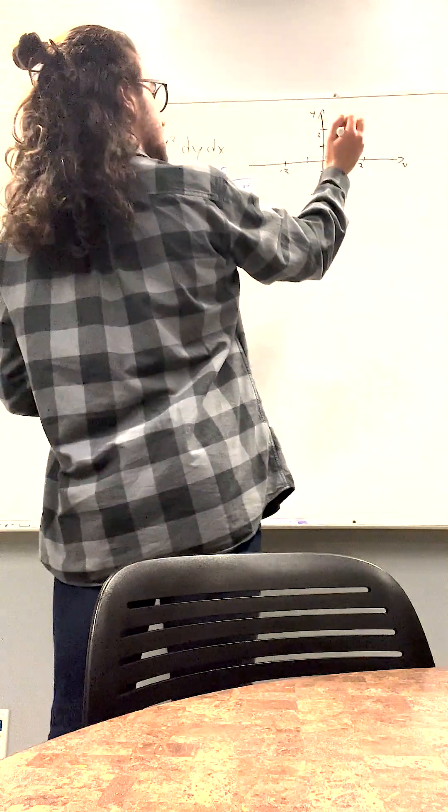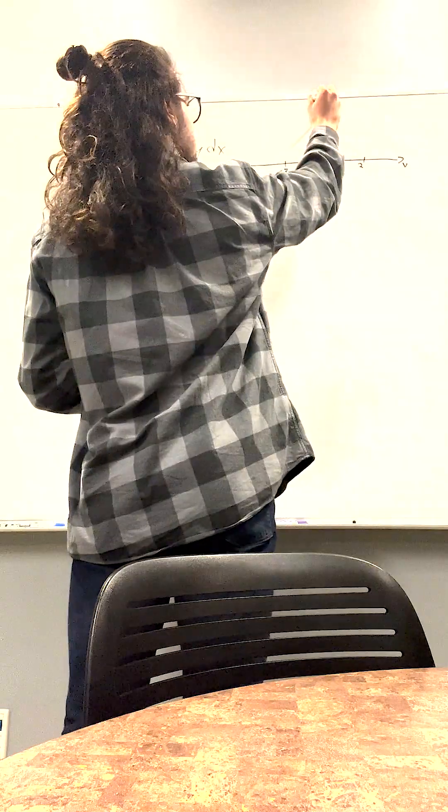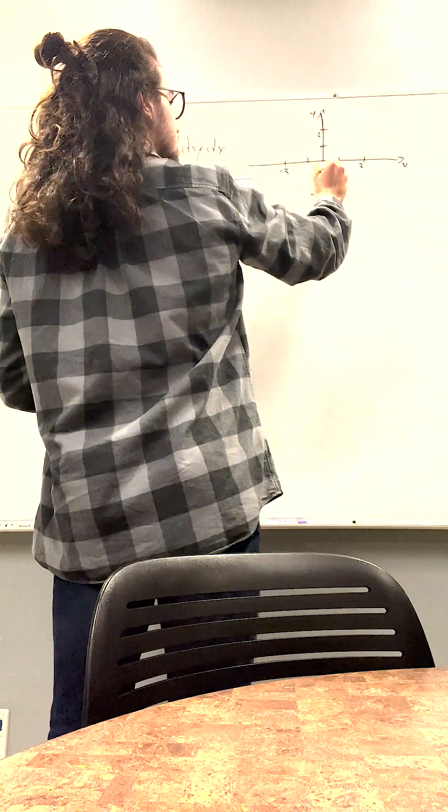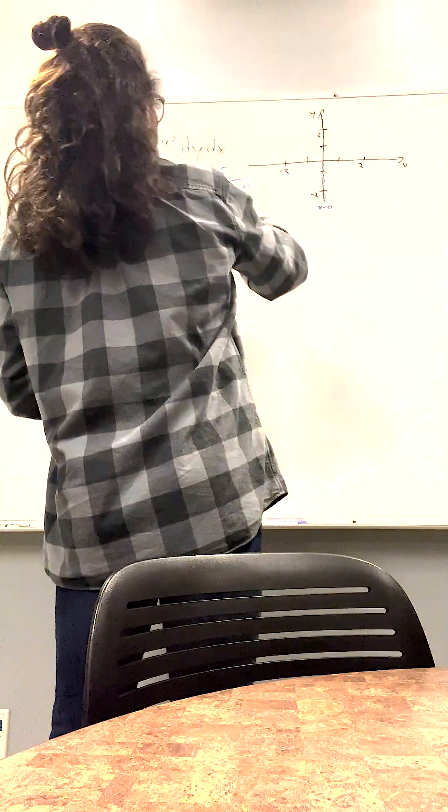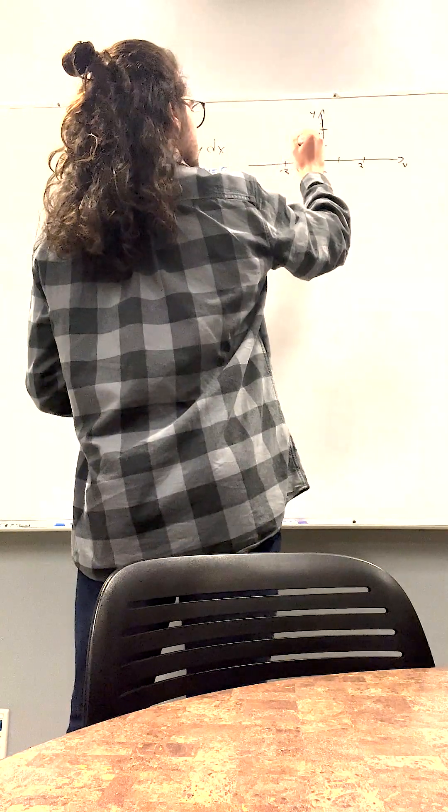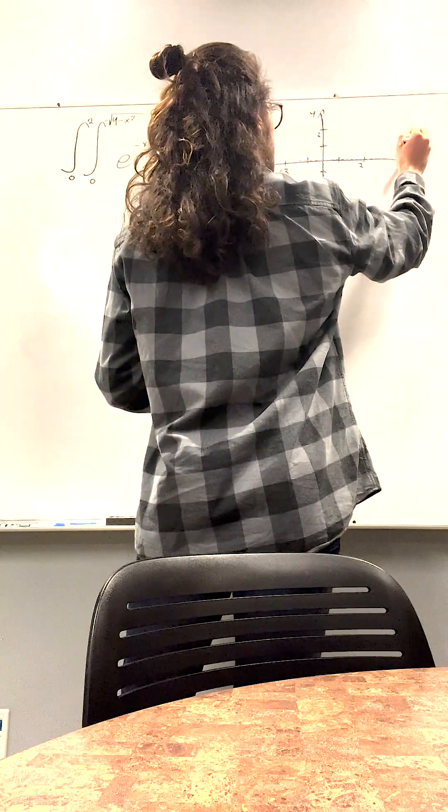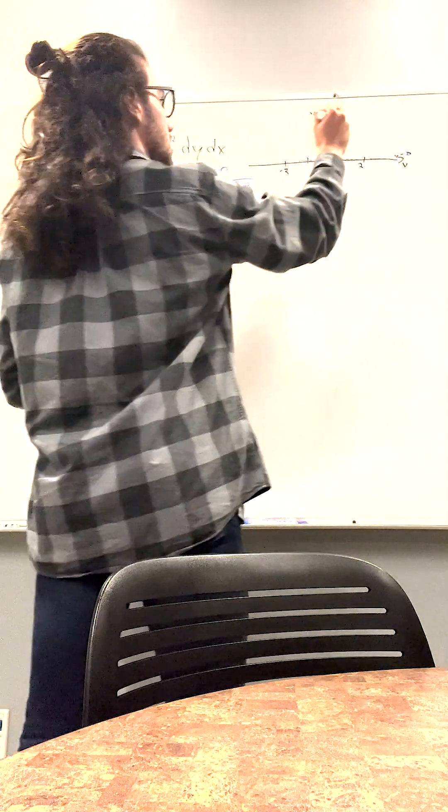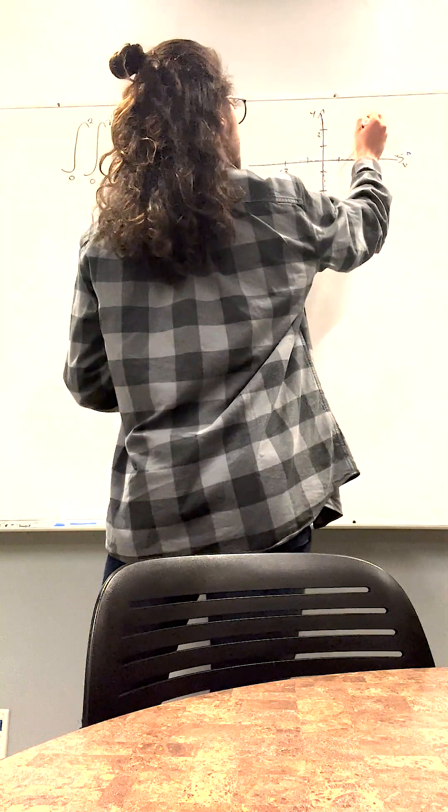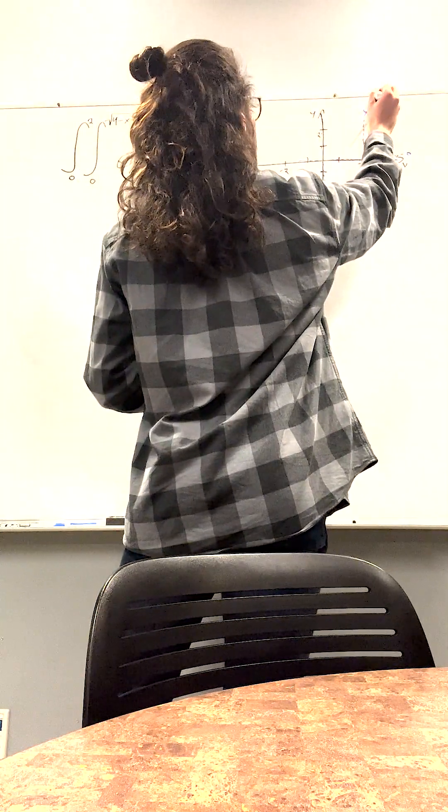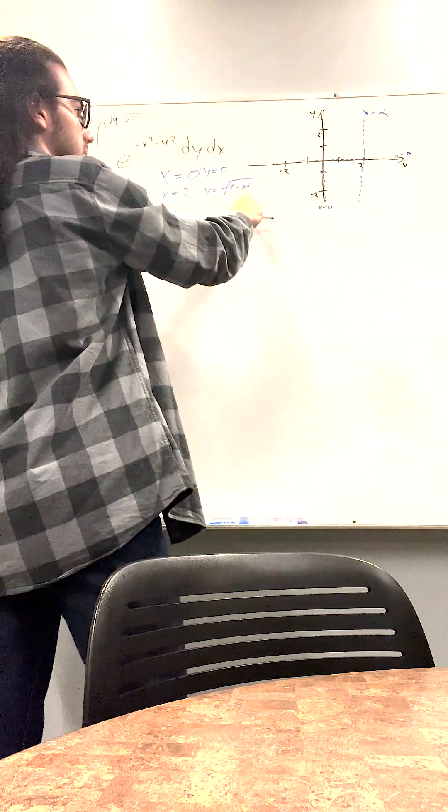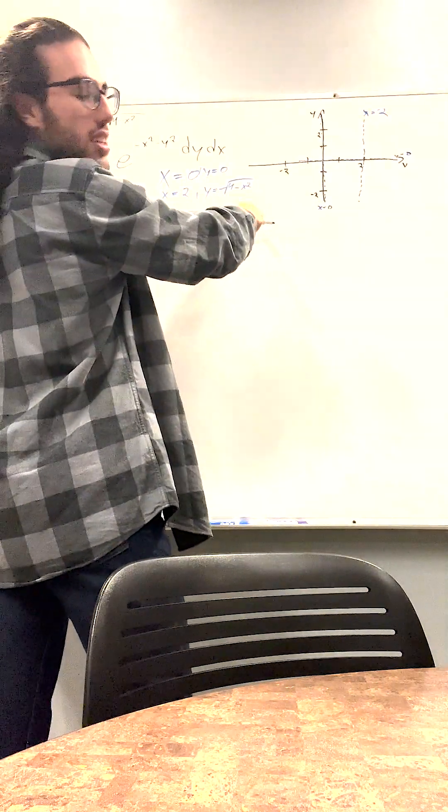Helps you a lot. x is equal to 0, x is equal to 2, and y is equal to square root of 4 minus x squared.